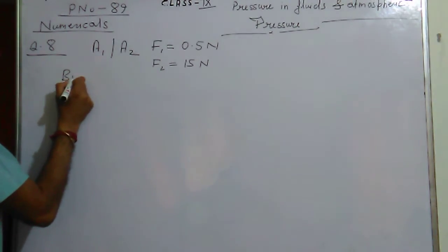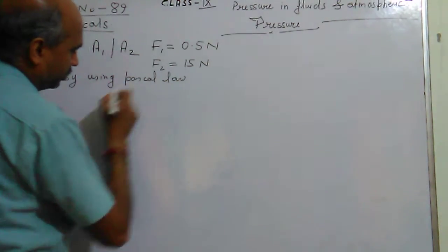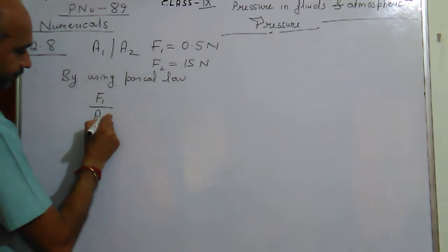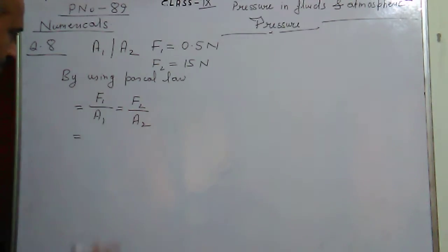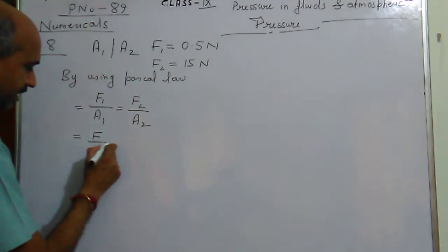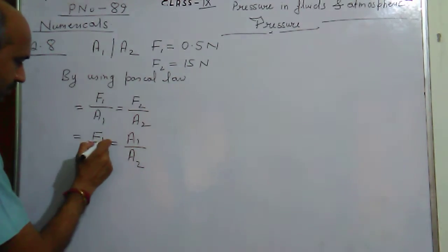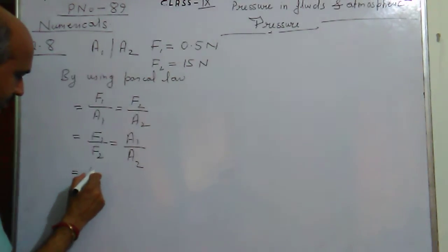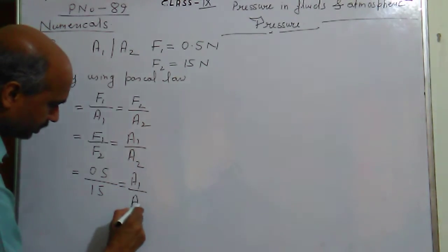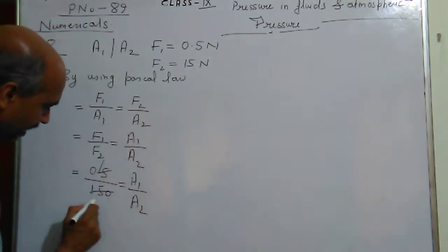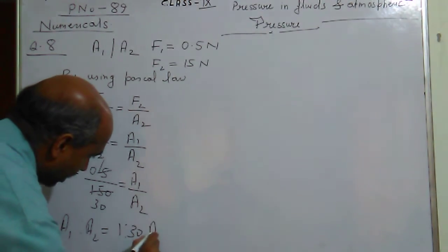Simply, by using Pascal's law — according to Pascal's law, F1 upon A1 equals F2 upon A2. Now rearrange: keep F1, shift F2 to the numerator side and A1 to the other, giving A1 upon A2. Put the values: F1 is 0.5 and F2 is 15. So A1 upon A2 equals 0.5 upon 15, which gives 1 ratio 30. So this is your answer for question number 8.